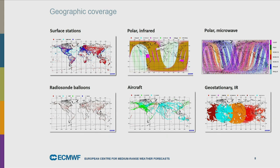We have a number of different satellite systems and receive data from about 70 different instruments - about 40 million observations every day from satellites. You can see the satellite tracks here: polar infrared, polar microwave, and the geostationary satellites fixed over the equator. All satellite data is processed in our data assimilation system and translated into model variables to initialize our forecasts.